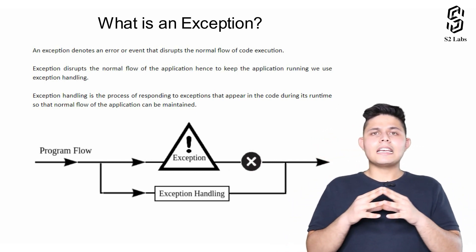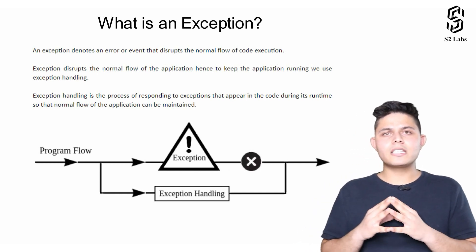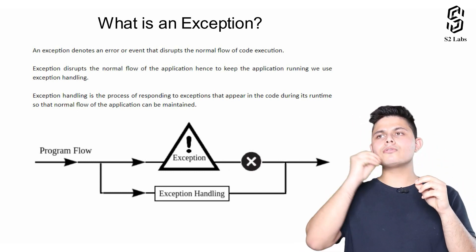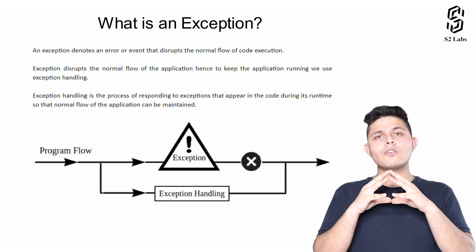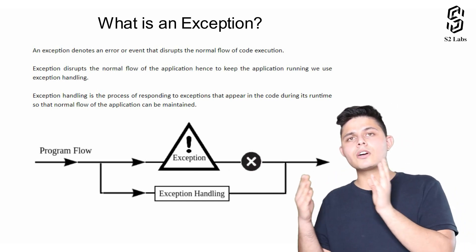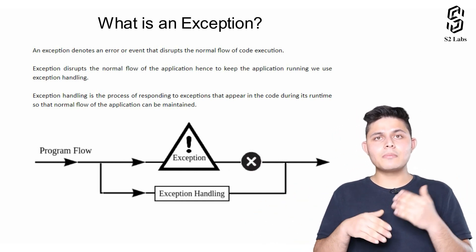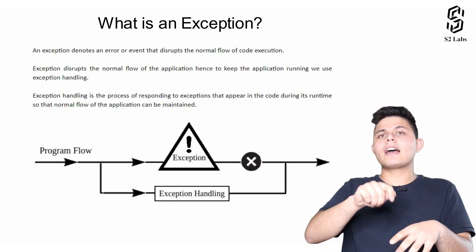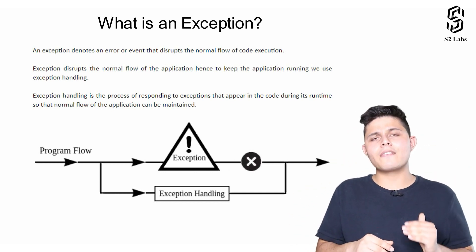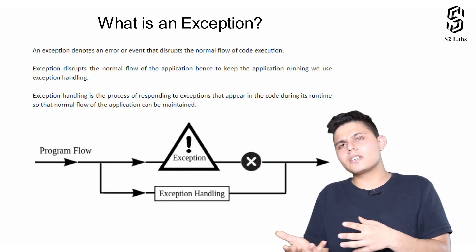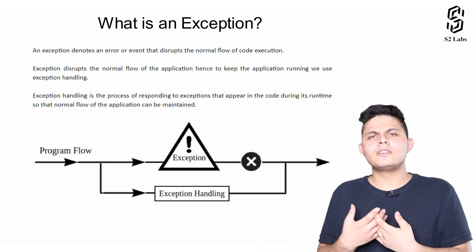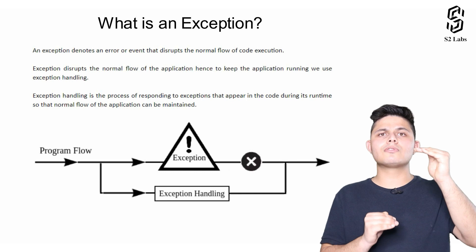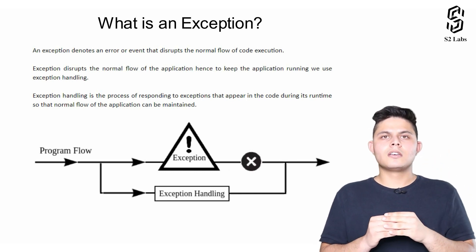Runtime errors are different because the code is written perfectly fine, but the code is dependent on other things which we'll only be able to identify at execution time. When we're executing that code, then only we'll be able to identify whether it's returning the right value or not. If it's not returning a value or something like that, there will be an exception that stops the complete execution.